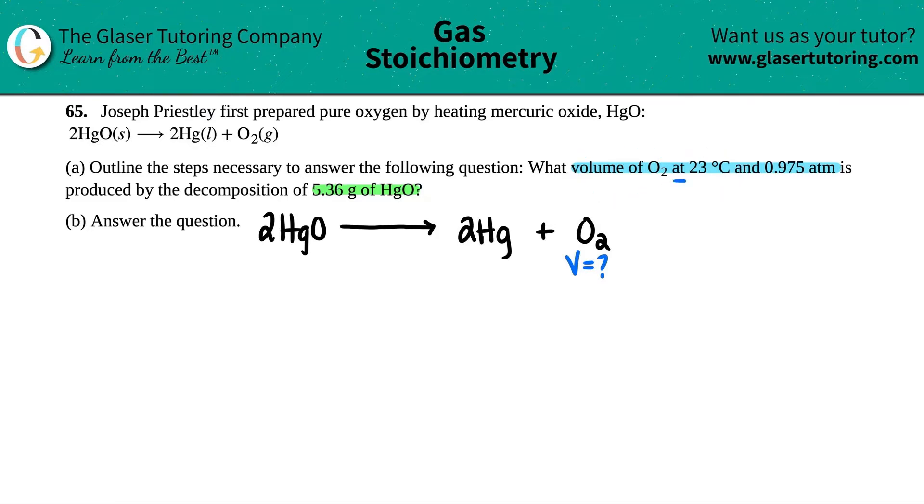Specifically, we're looking for the volume of this one, and they're giving us a lot of other things. What volume of O2 at 23 degrees Celsius? So I now have a T value—temperature was 23 degrees Celsius—and a pressure. Atm is a pressure, so I have a P value of 0.975 atm.